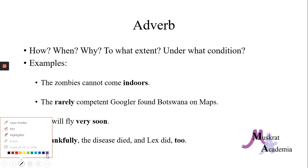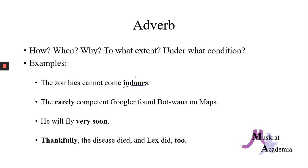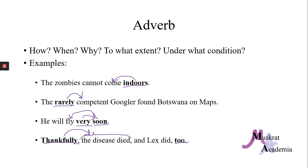For example, the zombies cannot come indoors. Indoors is our adverb, and it's modifying come, the verb — where can the zombies not come? Indoors. The rarely competent Googler from Botswana on Maps — rarely is our adverb modifying competent. How competent is our Googler? Rarely, which is a little concerning. He will fly very soon — we have two adverbs modifying different things: soon answers when, and very modifies soon. Thankfully, the disease died, and Lex did too. Thankfully is modifying this entire phrase, and too is an adverb modifying did.